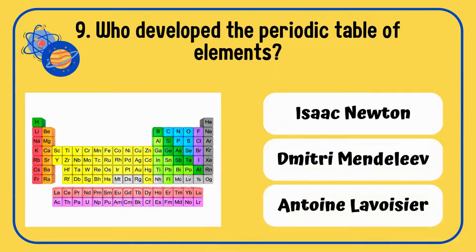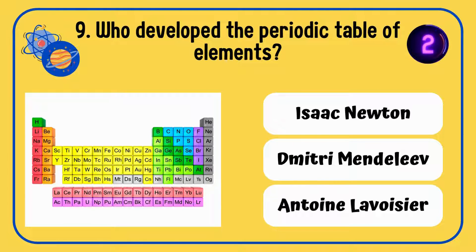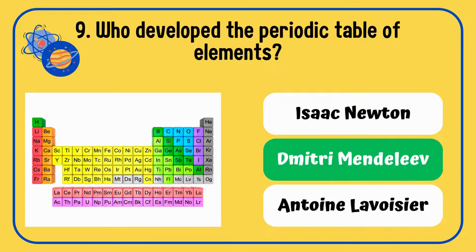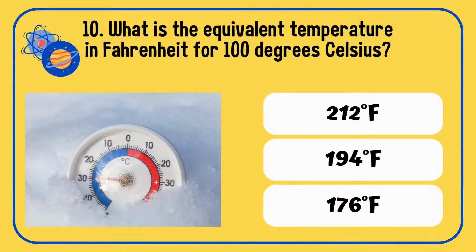Who developed the periodic table of elements — Isaac Newton, Dmitri Mendeleev, or Antoine Lavoisier? The answer is Dmitri Mendeleev.